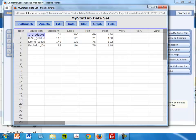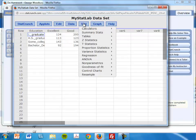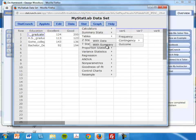To do the calculation, it's under Stat, Tables, Contingency, Summary.